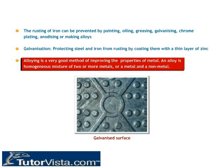Alloying is a very good method of improving the properties of a metal. An alloy is a homogenous mixture of two or more metals, or a metal and a non-metal.